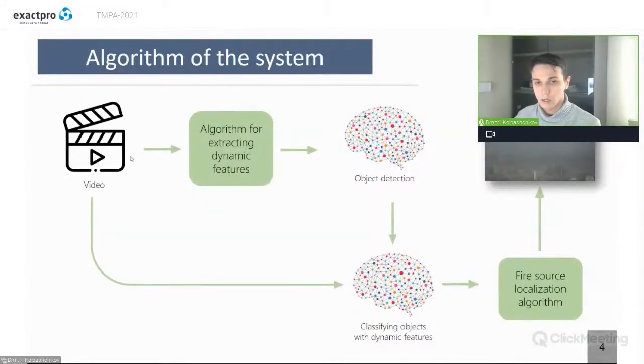At first we extract some dynamic features, use object detection to define some objects that could be smoke. And then we classify this object.